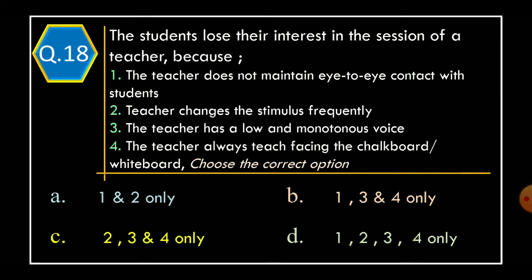Question 18: Students lose their interest in the teacher's session because — Statement 1: the teacher does not maintain eye-to-eye contact with students; Statement 2: teacher changes the stimulus frequently; Statement 3: teacher has a low and monotonous voice; Statement 4: the teacher always teaches facing the chalkboard or whiteboard. Options: Option A: Statements 1 and 2 only; Option B: Statements 1, 3, and 4 only; Option C: Statements 2, 3, and 4 only; Option D: Statements 1, 2, 3, and 4 only. The correct option is Option B: Statements 1, 3, and 4 only.